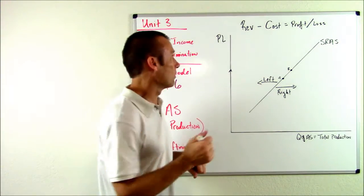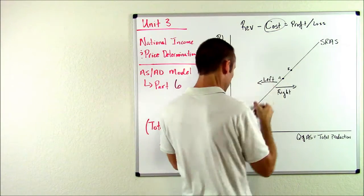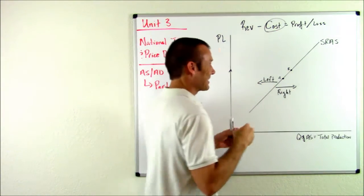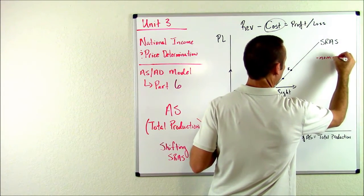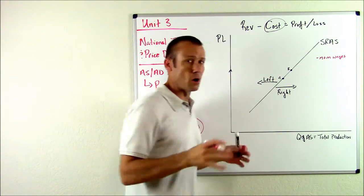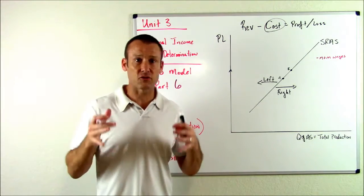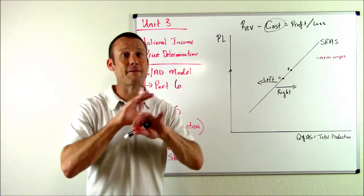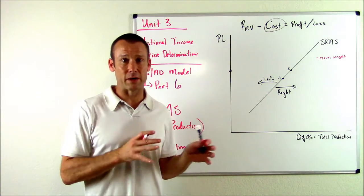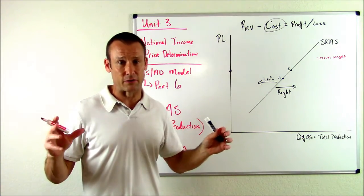Number one, the biggest one. Once again, focusing on cost. The biggest thing is nominal wages. There's nothing more important for you to know as far as what shifts the SRAS curve than nominal wages. That's a ubiquitous cost. What do I mean by that? Every business has to pay wages.